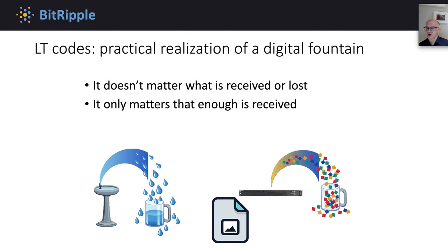LT codes are a practical realization of a digital fountain. For example, suppose we have a digital image which is the source data to be transmitted from a sender to a receiver. LT encoding at the sender can be used to generate encoded symbols from the digital image that are placed into packets and sent to the receiver. Some of the packets may be lost along the way and some are received. It doesn't matter which packets are lost. All that matters is that enough packets arrive at the receiver to recover the original image, where enough is the size of the image. In many ways, this is analogous to the properties of a water fountain.